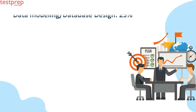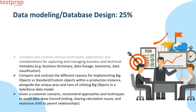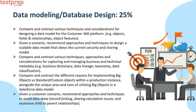Number 1: Data Modeling or Database Design, 25%. First, compare and contrast various techniques and considerations for designing a data model for the Customer 360 platform — for example, objects, fields, and relationships, and object features. Second, given a scenario, recommend approaches and techniques to design a scalable data model that obeys the current security and sharing model.